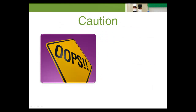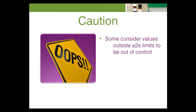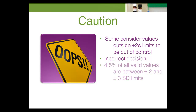Some laboratories consider any quality control value outside its positive-negative 2s limits to be out of control. They incorrectly decide that the patient's specimens and QC values are invalid. An analytical run should not be rejected if a single quality control value is outside the positive-negative 2s QC limits but within the positive-negative 3s QC limits. Approximately 4.5% of all valid QC values will fall somewhere between positive-negative 2s and positive-negative 3 standard deviation limits. Laboratories that use a positive-negative 2s limit frequently reject good runs, meaning patient samples are repeated unnecessarily, labor and materials are wasted, and patient results are unnecessarily delayed.